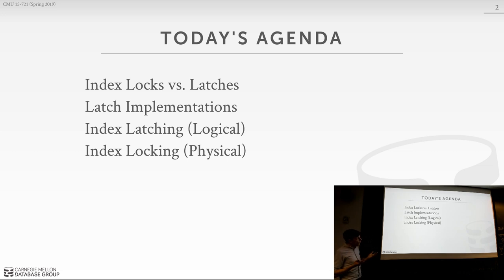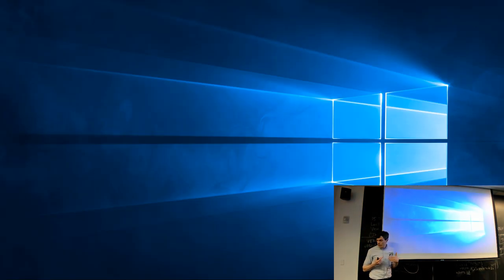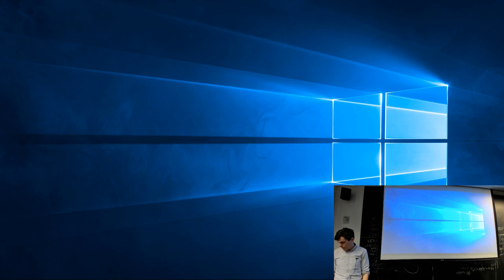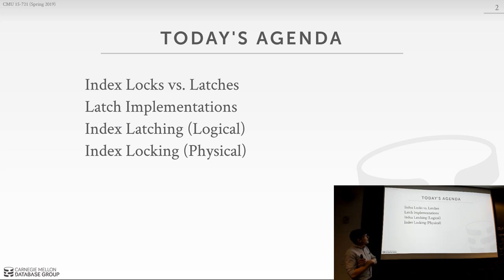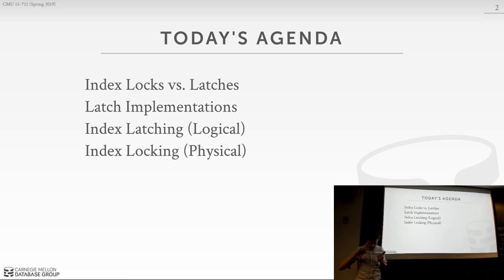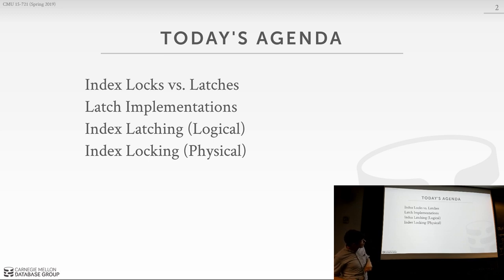Today's agenda is a high-level overview of concurrency control mechanisms we need. It's an overview of concurrency control methods in the context of indexes. It'll be a combination of understanding how to make our indexes thread safe and how to make sure that our transactions see the correct information. We'll talk about the difference between index locks and latches, how to actually implement a latch, and then the logical and physical techniques to protect indexes using the combination of these things.